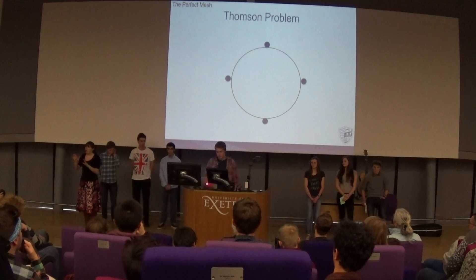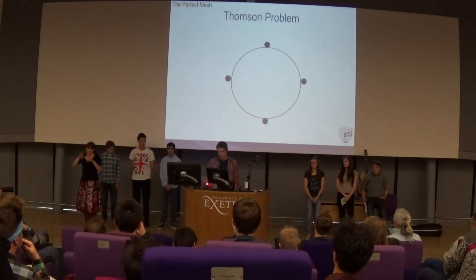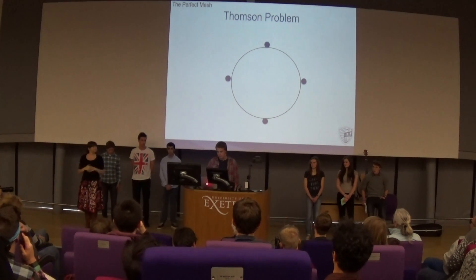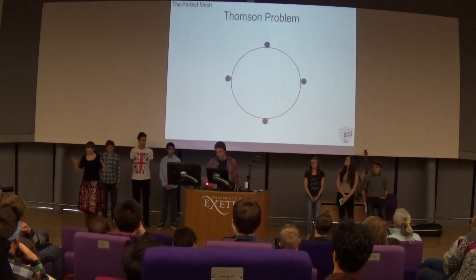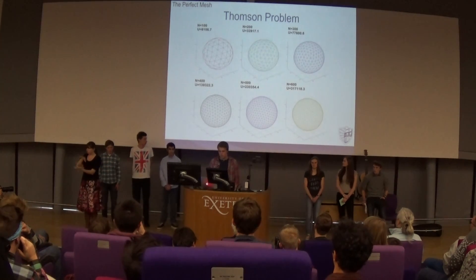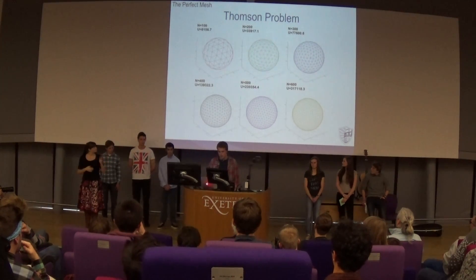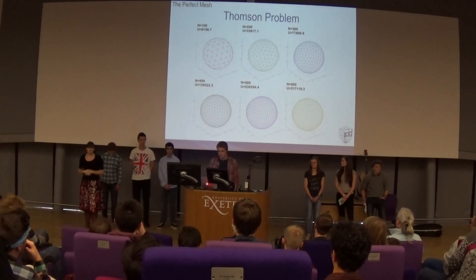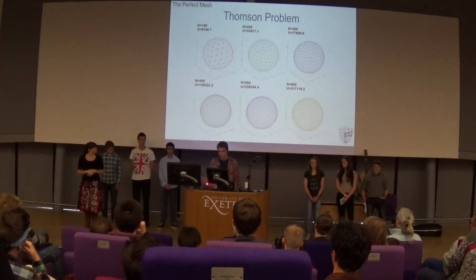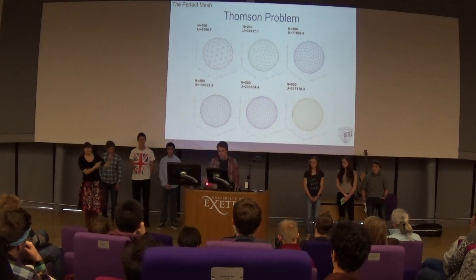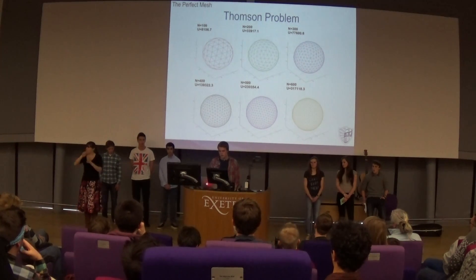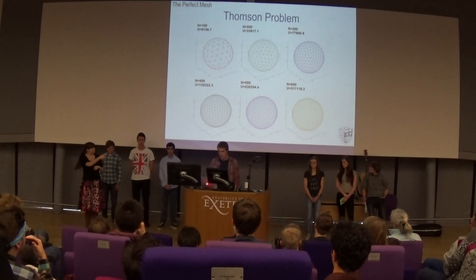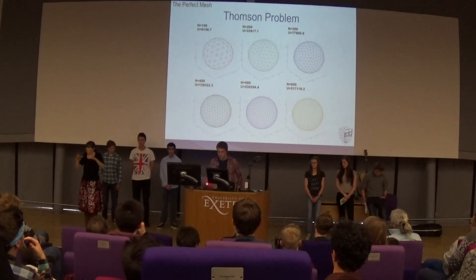If we take every electron and join them up as vertices of faces on a mesh, we can create fairly uniform meshes. The larger the number of electrons, the more complicated and high-definition the mesh gets. Yet, as is visible with the N=600 mesh, you can see that it's not entirely uniform — so this is not the correct solution to our problem.